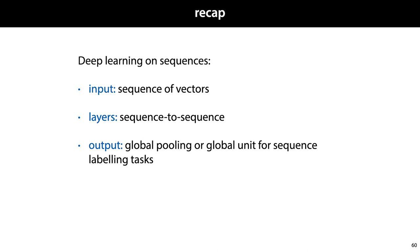So that's the general view of how we apply deep learning to sequences. We view our input as a sequence of vectors, we build our models primarily as a stack of sequence-to-sequence layers, and if we have a sequence-labeling task, then we need to apply global pooling or select a global unit to reduce from a sequence to a single vector.